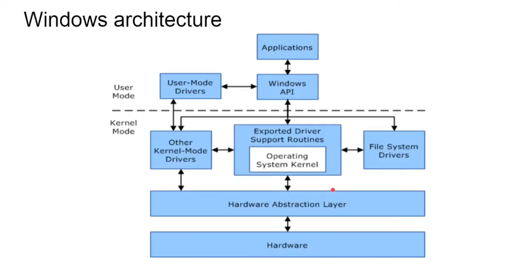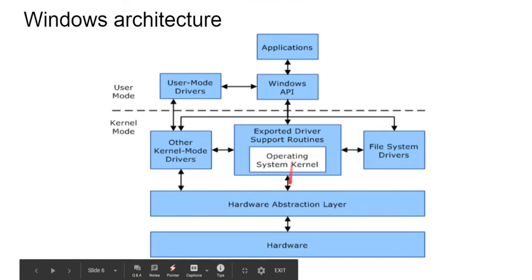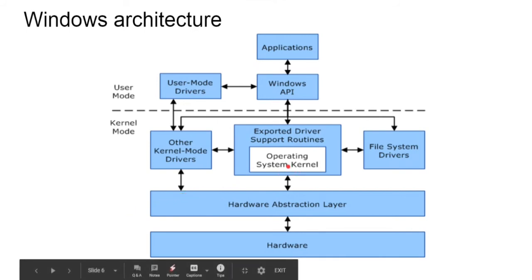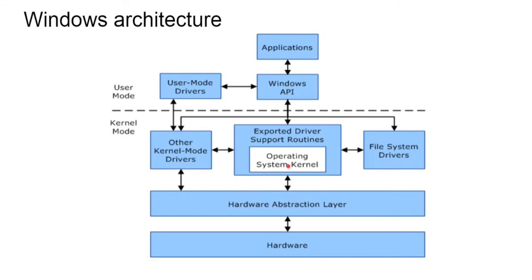We have the Windows architecture. You can see we have the application, we have Windows API, and user mode drivers. There are also kernel mode drivers. This is the kernel mode. The kernel contains the exported driver support routines and the operating system kernel. Kernel is the core of the operating system. We have file system, hardware abstraction layer, and hardware. Kernel is a bridge among the applications, drivers, and hardware. It is the nucleus of the operating system — a simple picture of Windows architecture showing applications, Window APIs, exported driver support routines, hardware abstraction layer, and hardware.